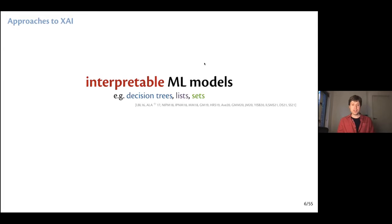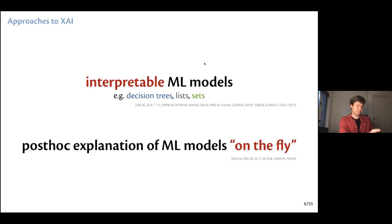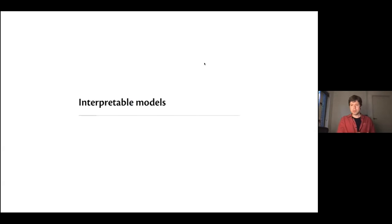There are two most prominent approaches to explainable AI. One is called interpretable models, where people learn interpretable ML models — these include decision trees, lists, and sets. The second and probably most famous approach is to compute explanations for black-box ML models on the fly, in the post-hoc fashion. I'll talk about both today. First, let's briefly talk about interpretable models.